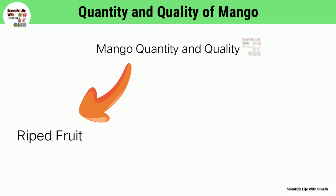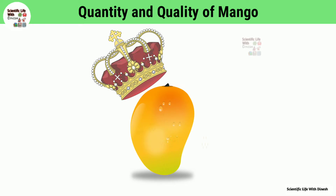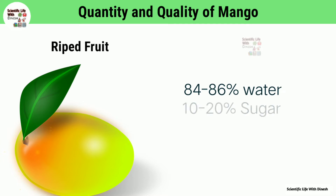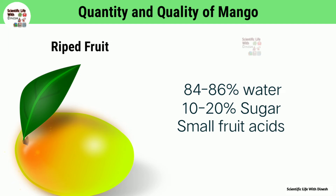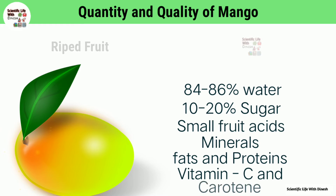The first part is ripened fruit. You know that the mango is the king of the Indian fruit. The fruit is diuretic and laxative. The ripened fruit contains 84 to 86 percent water, 10 to 20 percent sugars, and small amounts of fruit acids, minerals, fat and proteins. It contains a fairly good amount of vitamin C and is a rich source of carotene.